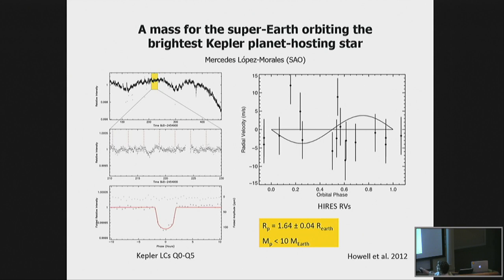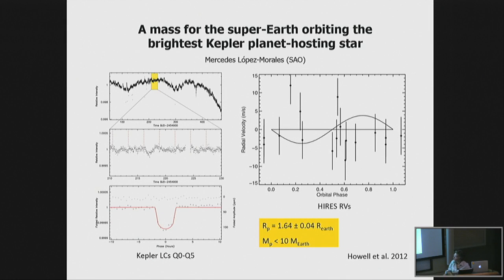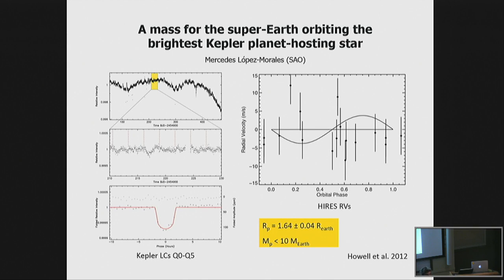Howell et al. 2012 pulled out a nice transit from the preliminary Kepler data and tried to measure radial velocities to confirm the planet mass. From the size it seemed to be a super-Earth. They took radial velocity data for about 30 days, but the stellar activity was kicking in and they couldn't measure the mass — only an upper limit of about 10 Earth masses. But they published it because it was the brightest Kepler star.